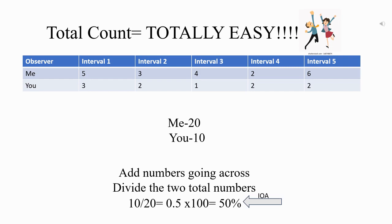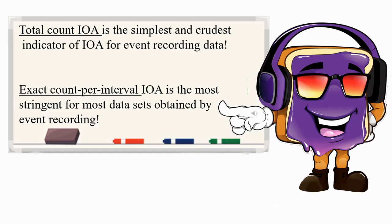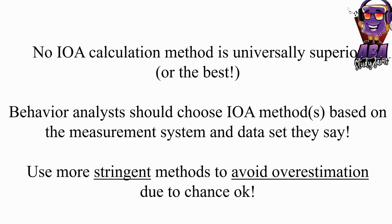Total count IOA is the simplest indicator of IOA for event recording data. Exact count per interval, on the other hand, is the most stringent for most data sets obtained by event recording. No IOA calculation method is universally superior or the best. Behavior analysts should choose IOA methods based on the measurement system and data set. Use more stringent methods to avoid overestimation due to chance.